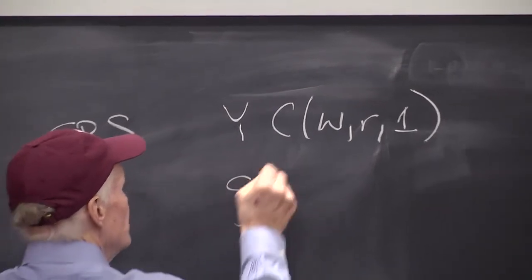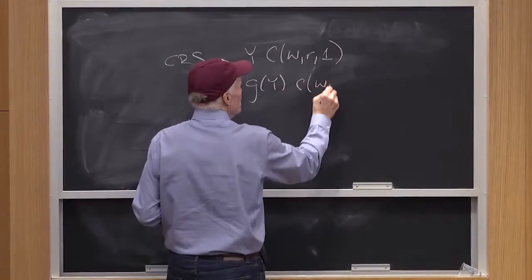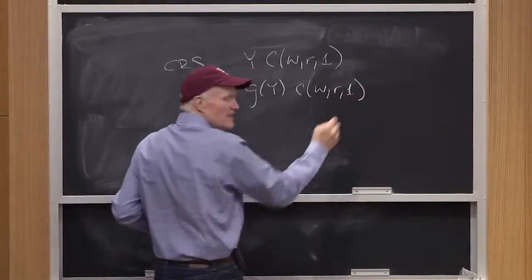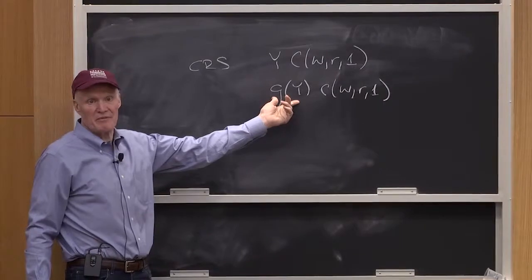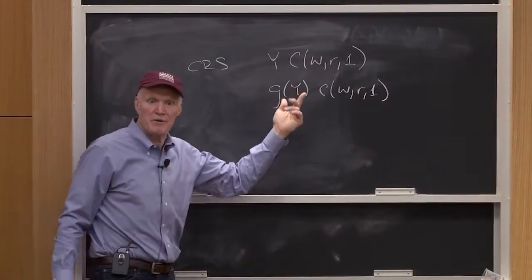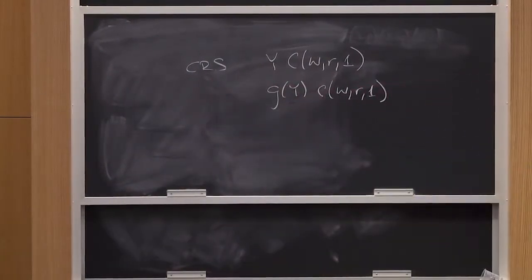Homothetic looks like G of Y, C of WR and 1. It looks like that. That's homothetic. That is, it looks like this one, except this isn't linear anymore. That would be a homothetic cost function.